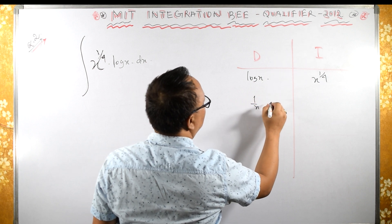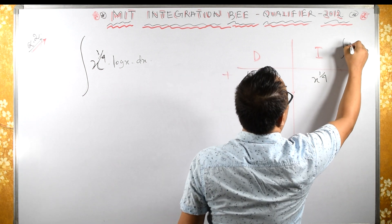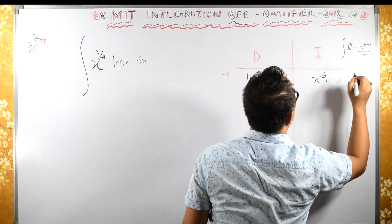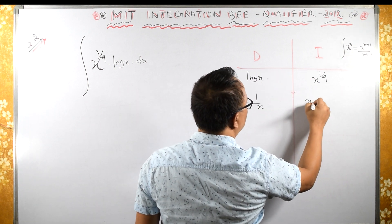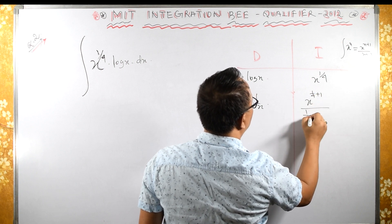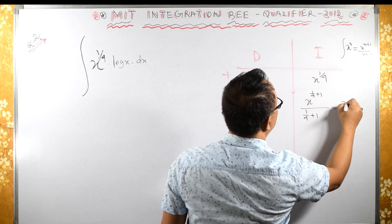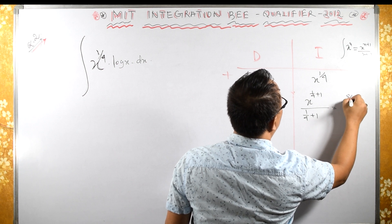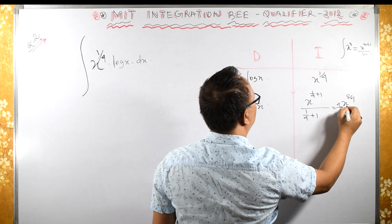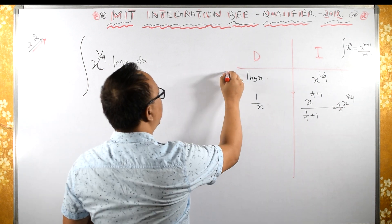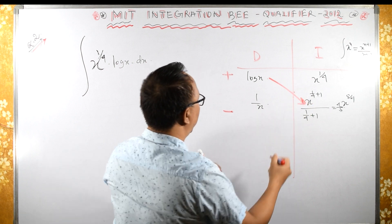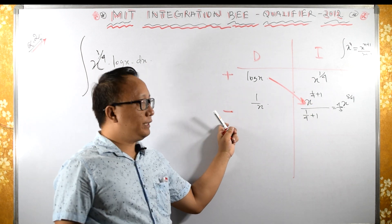Let's differentiate: differentiation of log x is 1 upon x. For integration, the rule is x raised to n integrates to x raised to n+1 upon n+1. So x raised to 1/4 integrates to x raised to 5/4 upon 5/4, which is 4/5 x raised to 5/4. In the DI table we have a plus sign then a minus sign.